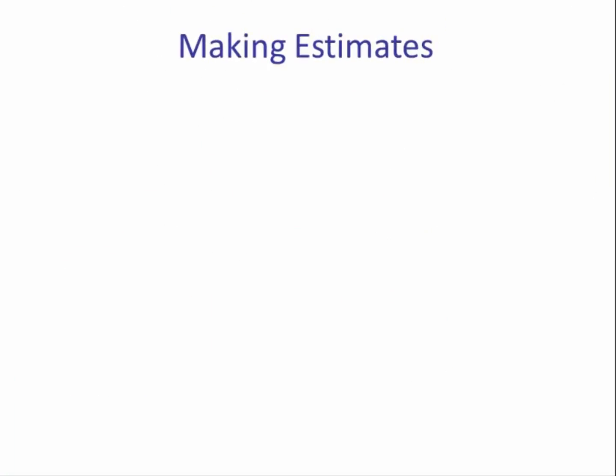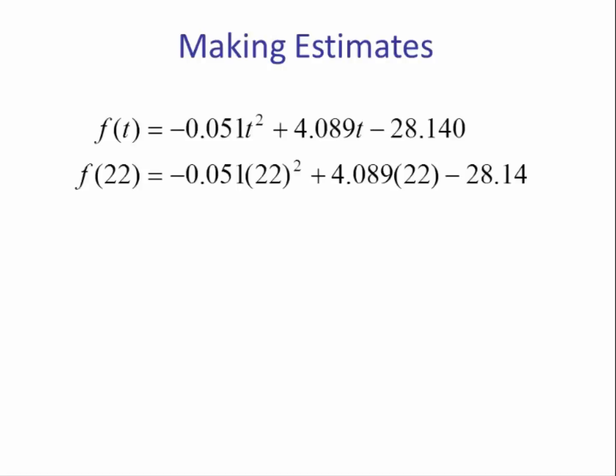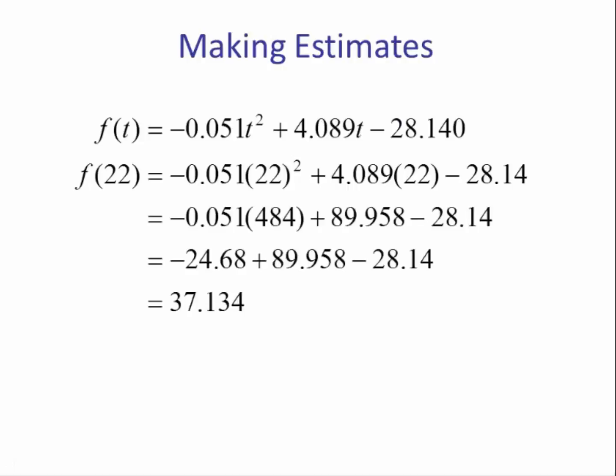To do this algebraically we take the function. We want to know what is the value of f when t is 22. So we substitute 22 in for t. In this case we take 22 squared, multiply it by our value of a, plus 22 times our value of b, and then we subtract the value of c. And performing the arithmetic, we have 37.134, just as the calculator told us.